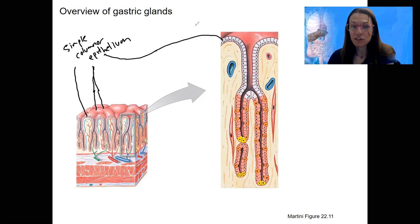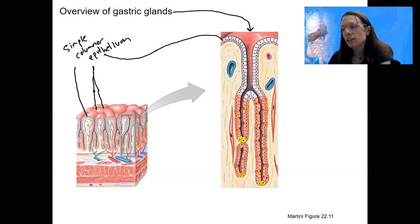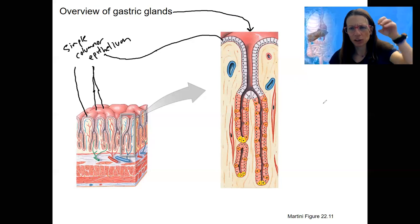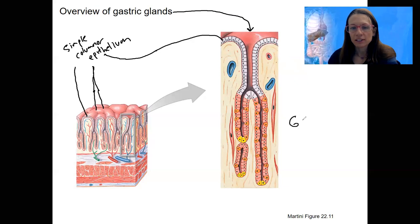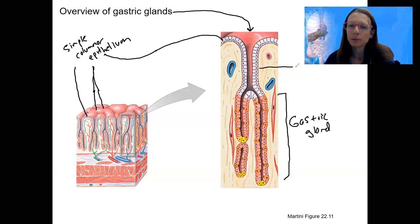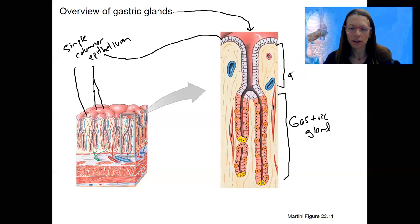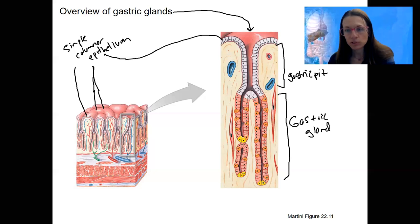The reason the stomach might digest itself is that these gastric glands produce a whole bunch of intense substances. This is a gastric pit, which leads to a gastric gland. The pit is kind of what you see from the top — you can see pits — and the gland is the whole structure. The pit would technically be this top part here, and the pit is the part you'd see looking at the surface of the stomach. Let's look at the cells in the gastric gland and pit.